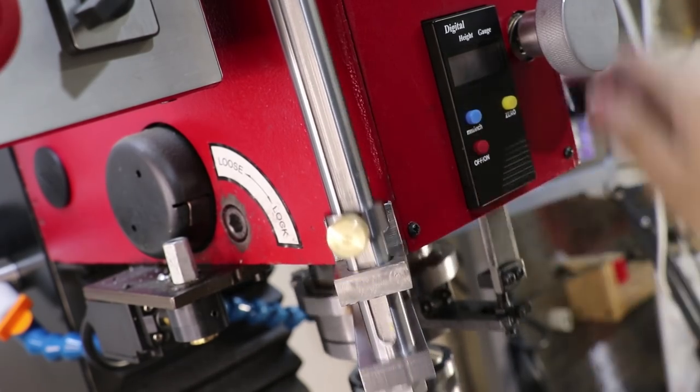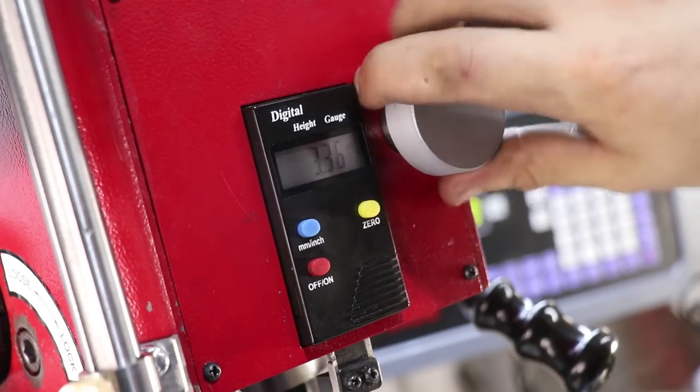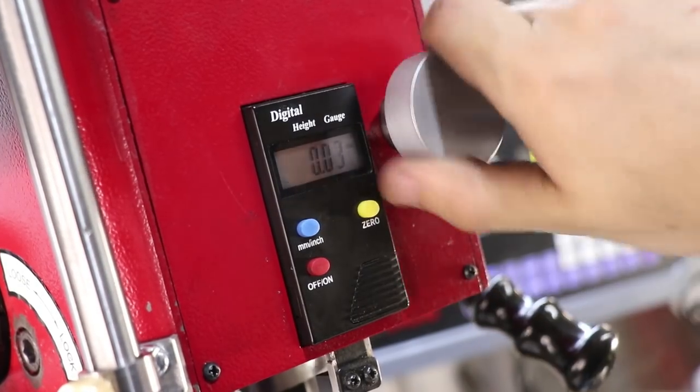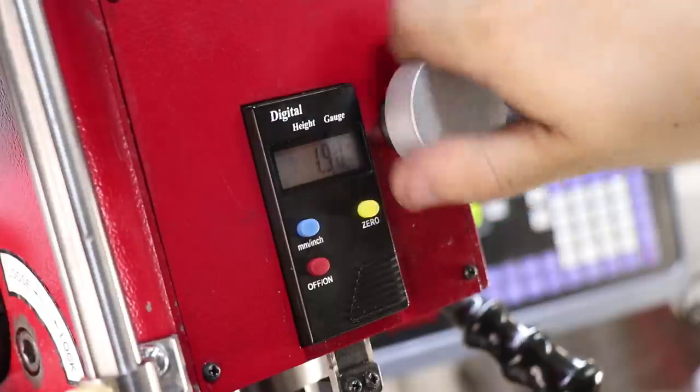However, if this style doesn't suit you, you can always mount a ruler and some sort of threaded rod to make a more traditional style one.